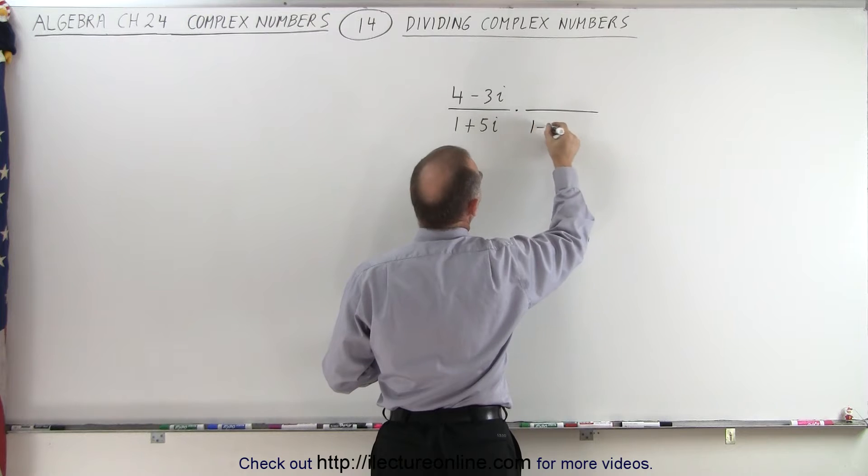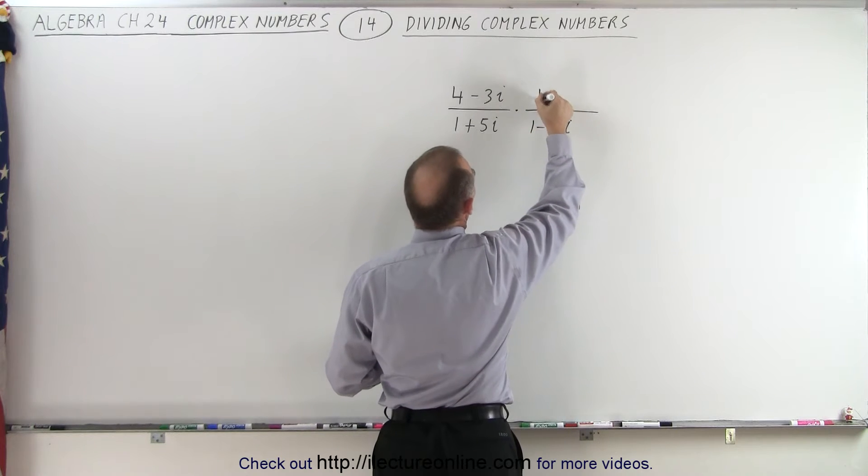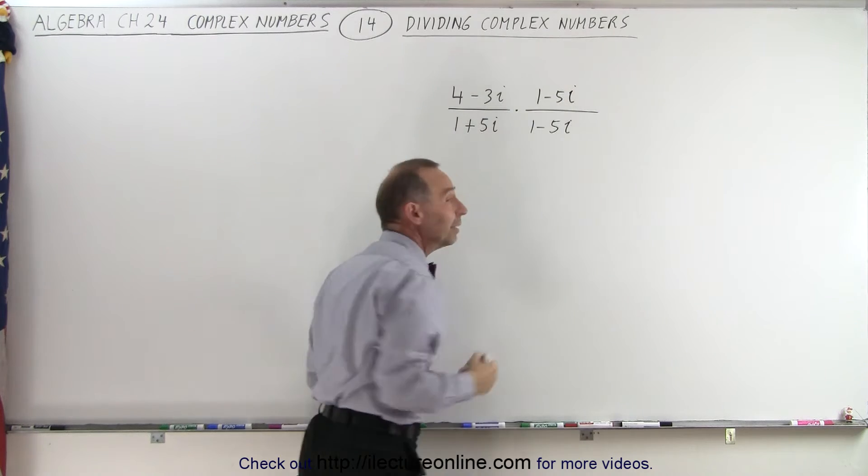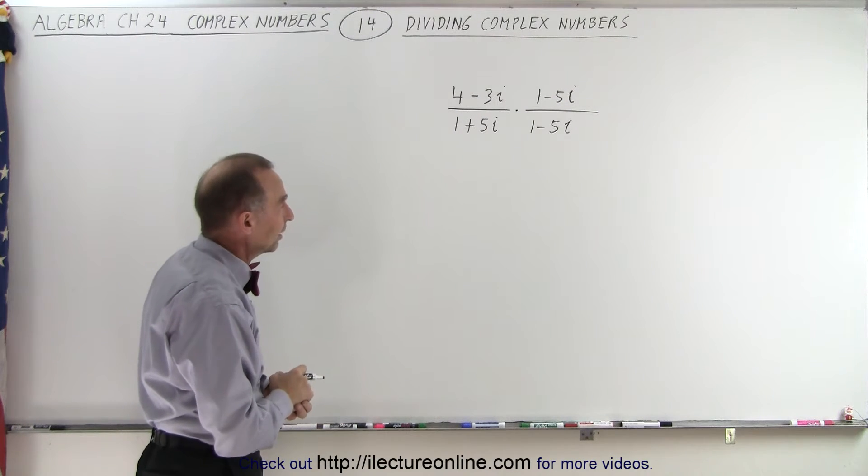So in the denominator we get 1 minus 5i, in the numerator we get 1 minus 5i. Notice that this fraction is equal to 1, and of course multiplying anything times 1 changes nothing.